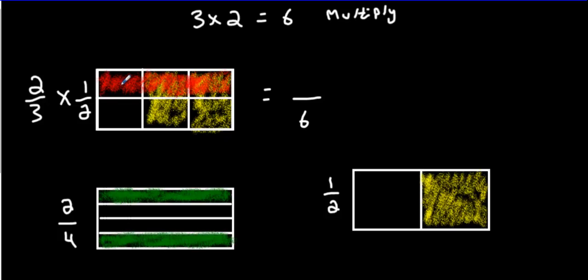I only count the ones that have overlapping colors. I'm not going to count this one or this one or this one. These are the only two pieces that have two colors in them. So my answer is going to be two out of six, which reduces down to one third of the shape. And that's how you multiply fractions.